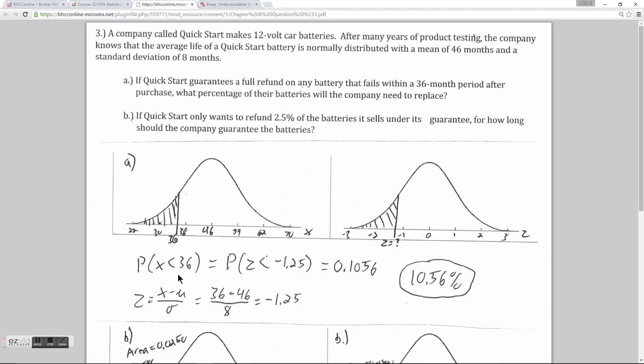Again, since it's normally distributed, I can change this x interval into an interval of z values that I can find the probability of. So converting the value of 36 months into a z value, I get a z value of negative 1.25. Essentially a battery that would last 36 months would be one that is 1.25 standard deviations below the mean.